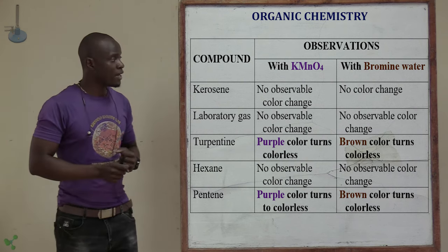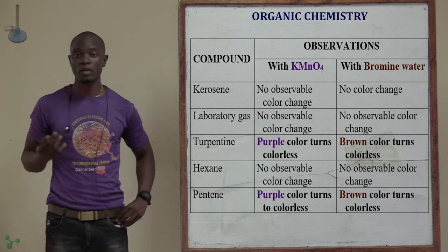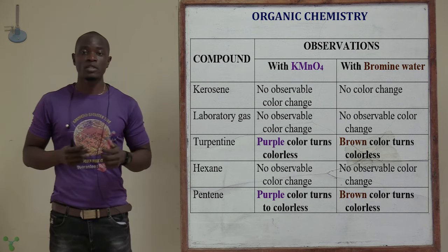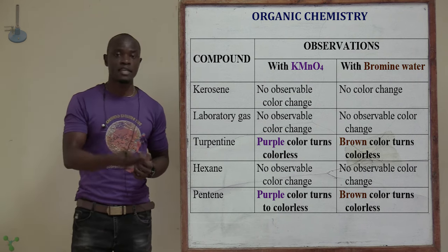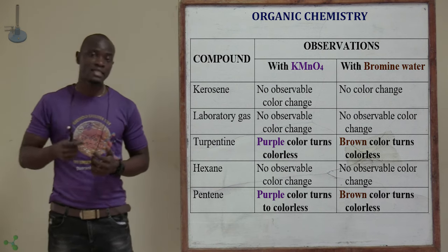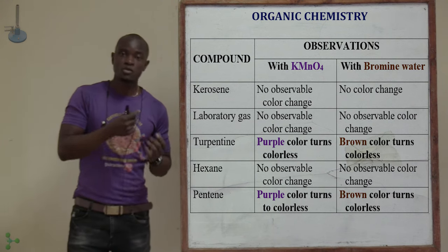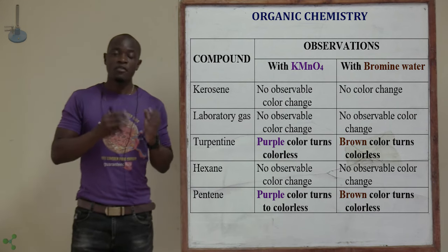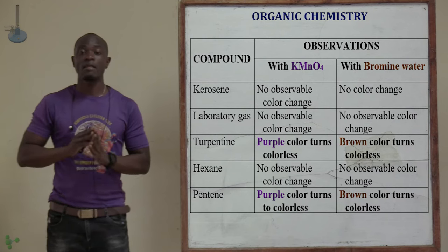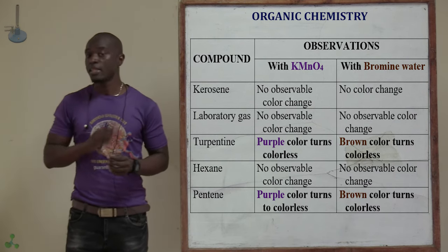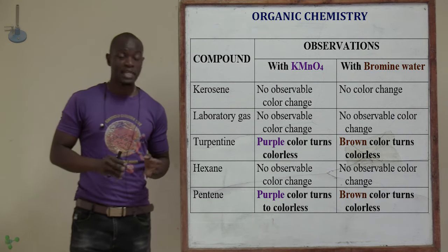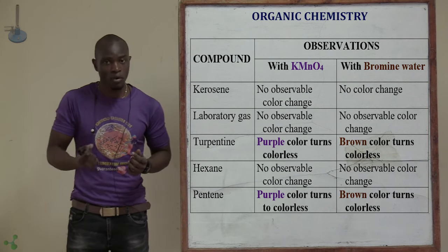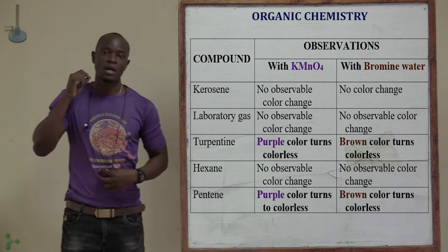Let's compare observations using potassium permanganate and bromine water for different compounds. First, let's test kerosene — bubble kerosene inside potassium permanganate and also inside bromine water. If we mix kerosene with potassium permanganate, there is no observable color change. If we mix it with bromine water, there is also no observable color change. This means kerosene falls under the family of alkanes because it is unable to discolorize potassium permanganate or bromine water.